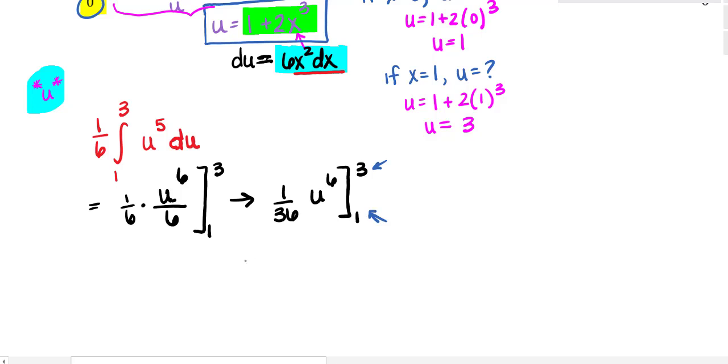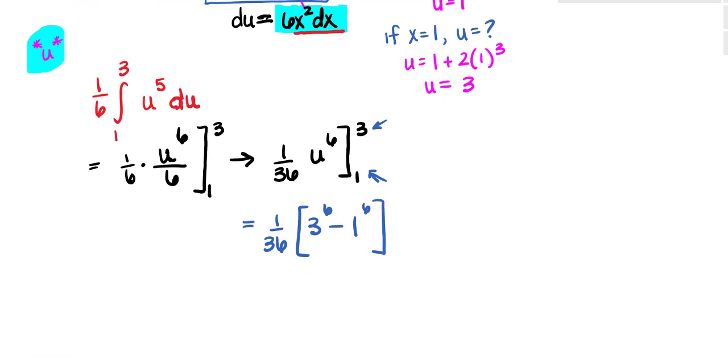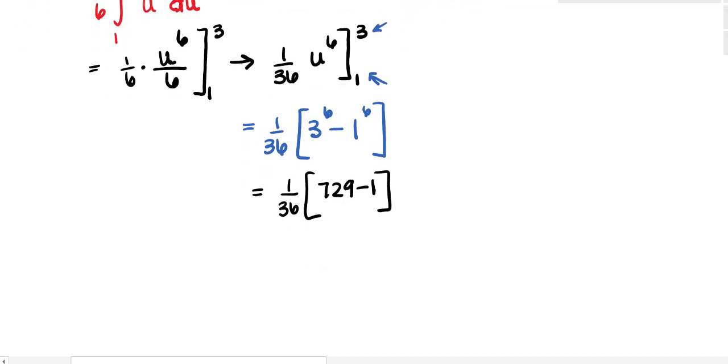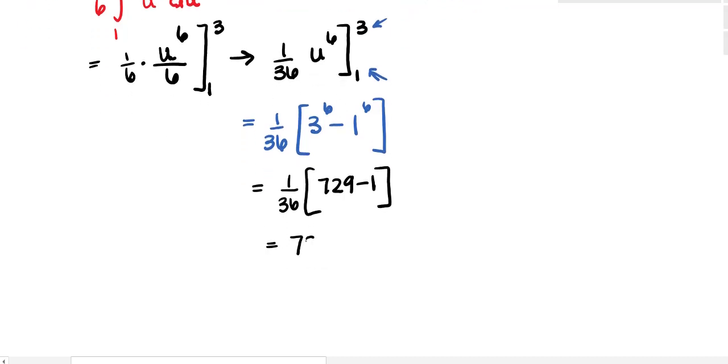I can substitute them right from here. So this is 1 over 36 times 3 to the sixth minus 1 to the sixth using our fundamental theorem of calculus, which is 1 over 36 times 729 minus 1, or 728 over 36, or 182 over 9.